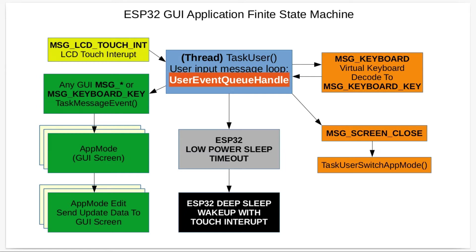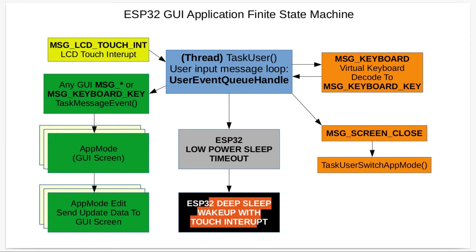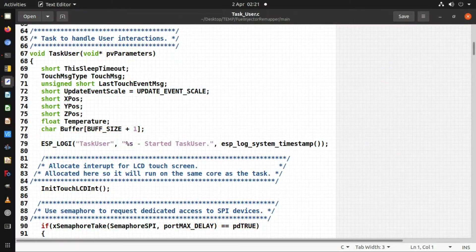The message loop also handles checking for a timeout on sleep mode. The software can send the application into low power sleep mode, where the ESP32 shuts down to its lowest power mode. By default the timer is turned off so it doesn't go to sleep, but it can be configured. When it times out, it goes to low power sleep mode, the screen shuts off, and all tasks stop. To come out of that mode, you just touch the screen and the application is displayed again.